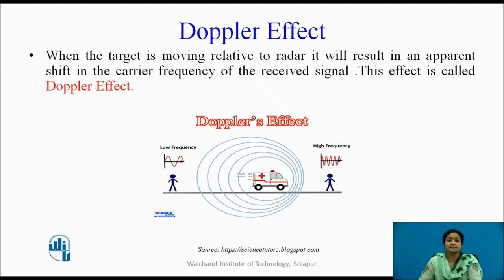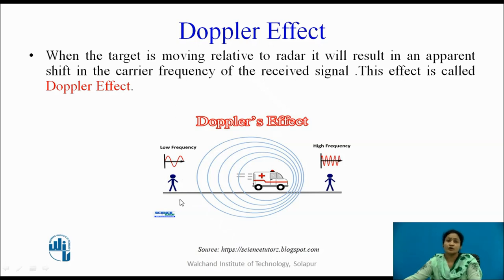To illustrate this, consider this diagram showing an ambulance approaching one user — Observer 2 — and moving away from Observer 1. As the ambulance approaches Observer 2, the frequency of the ambulance sound increases for Observer 2 compared to Observer 1, because the ambulance is moving away from Observer 1. This change in frequency is given by the Doppler effect.